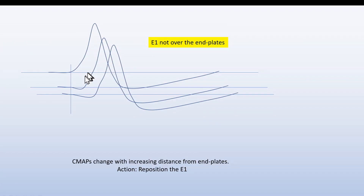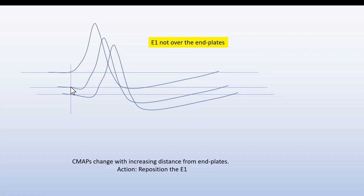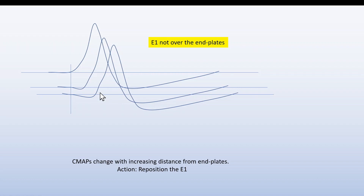Here is a situation that we all know: if we have a good position of E1, then we have a negative takeoff. If we move the electrode a little away from the end plate zone, then we will have initial positivity here — an arriving part of the signals. And if we move it even further away, then the time latency here will be longer. We should all try to get a correct position with as good a negative takeoff as possible.